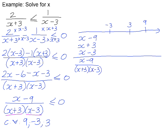When working with inequalities of fractions, we separate out each factor and look at the effect of the critical values. For x minus 9: it is zero at positive 9, positive to the right of 9, and negative to the left of 9. For x plus 3: it is zero at negative 3, positive to the right of negative 3, and negative to the left. For x minus 3: it is zero at positive 3, negative to the left of positive 3, and positive to the right.